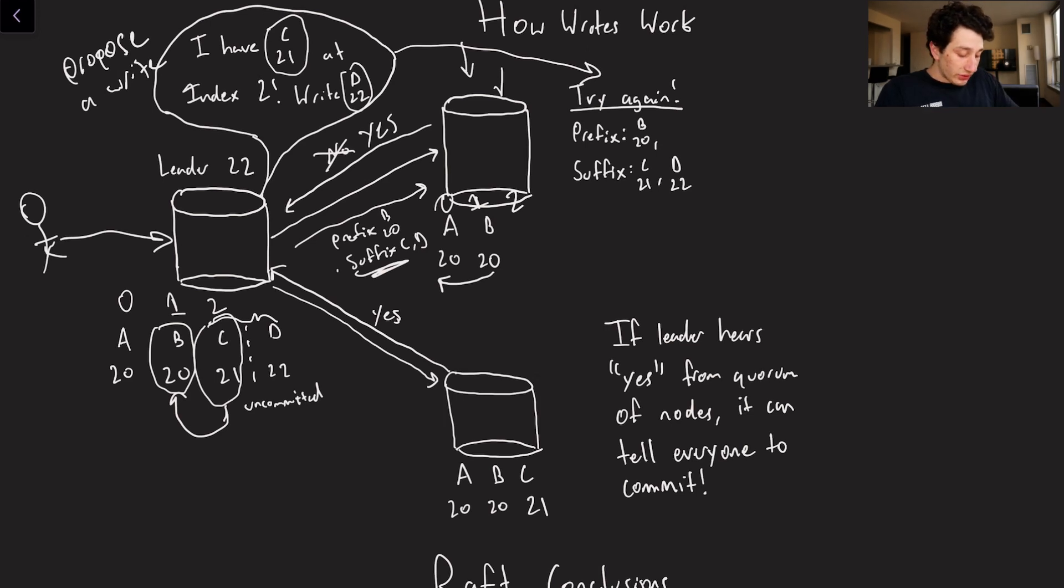Additionally, it is now also going to send out c21, like before, as the prefix, and d22, as the suffix to this bottom node. Since the bottom node has already been backfilled sufficiently, it already has c21 at index two, we can go ahead and respond yes, right here. And the leader can keep track of that.